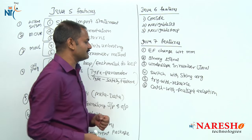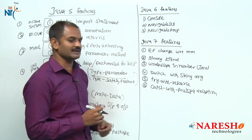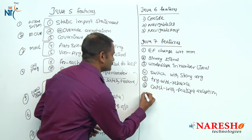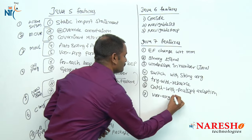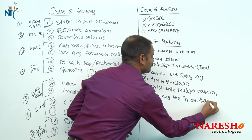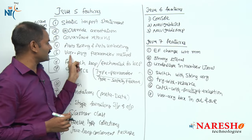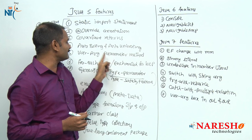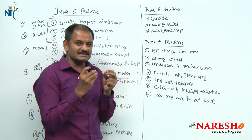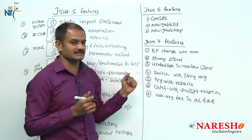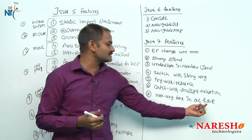I will discuss every feature with appropriate real-time and project examples in the next sessions. Right now I am just giving a quick overview. The seventh feature is a varargs bug fix in overloading and overriding methods. The varargs concept was introduced in Java 5, but when creating overloaded methods with varargs there was a small conflict in Java 5 and 6. That conflict is resolved in Java 7, and a varargs bug in overriding is also fixed.